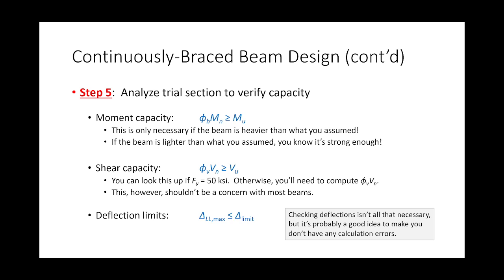Let's talk about deflection limits. The last problem in class used an L over 400 deflection limit. Your deflection limits typically are L over some number. The bigger that number, the more stringent the deflection limit. For bridges, L over 800 is very common; for buildings, L over 360 is a very common limit. The bigger the number, the higher the bar we need to meet.